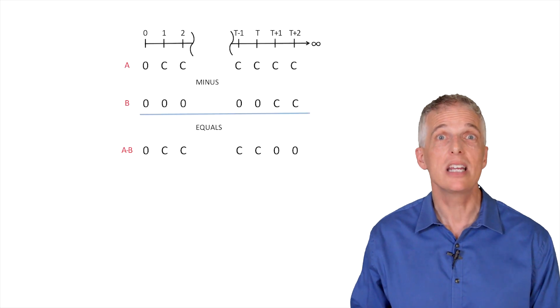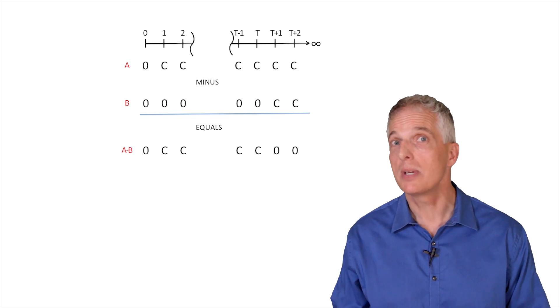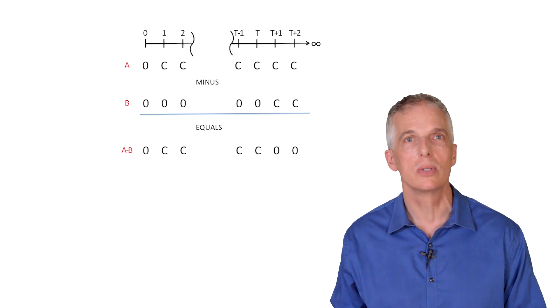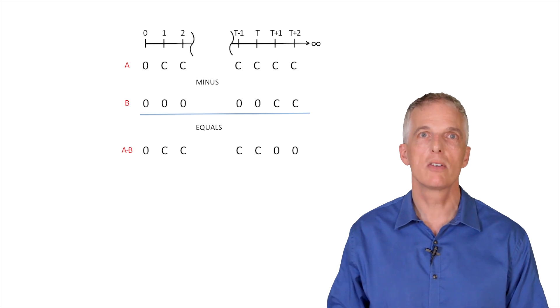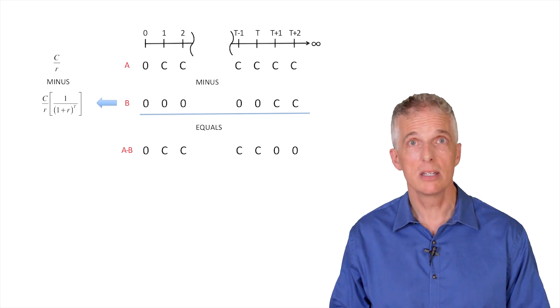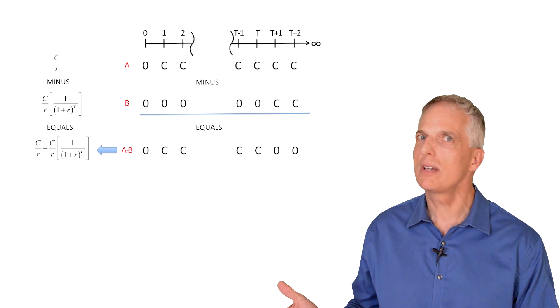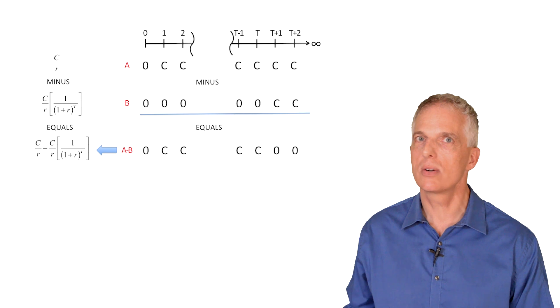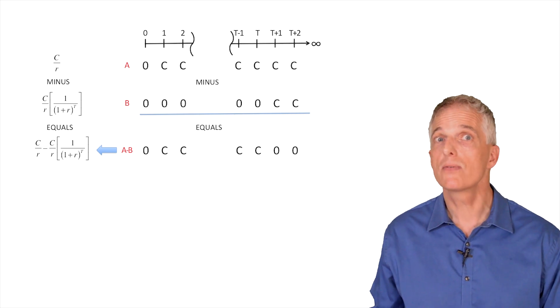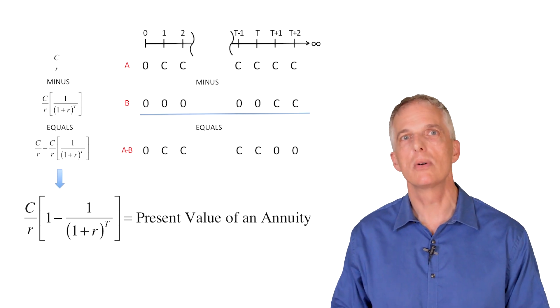Now we can pull this all together to calculate the value of an annuity. If the difference in the cash flows between A and B in each year represents that of an annuity, it follows that the difference in the present values of A and B represents the present value of an annuity. Thus, we start with the present value of perpetuity A, C over R, and subtract the present value of perpetuity B, which yields the present value of A minus B. If we simplify the resulting formula by factoring out C over R, we end up with a simplified version of the annuity formula.